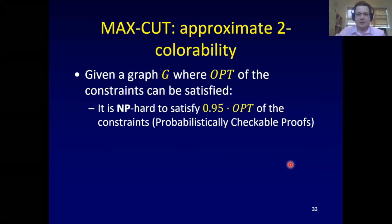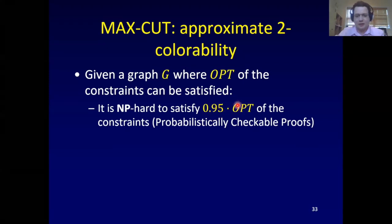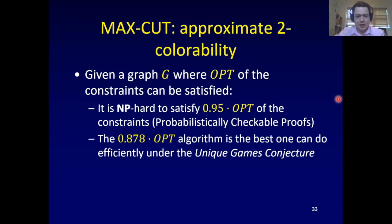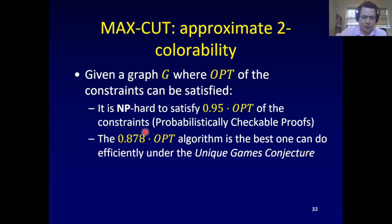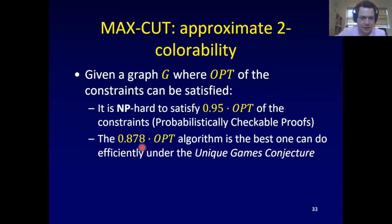On the other hand, using the huge hammer from complexity theory called probabilistically checkable proofs, you can show that it's NP-hard to get within five percent of the optimal. Under something called the unique games conjecture, that 88% solution is actually as good as you can get — the conjecture would imply it's NP-hard to beat the 88% solution.